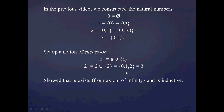We also showed that the set omega — the set containing the natural numbers — exists from the axiom of infinity, which showed that there was at least one inductive set, and we constructed the set omega from that. We also showed that omega is inductive.